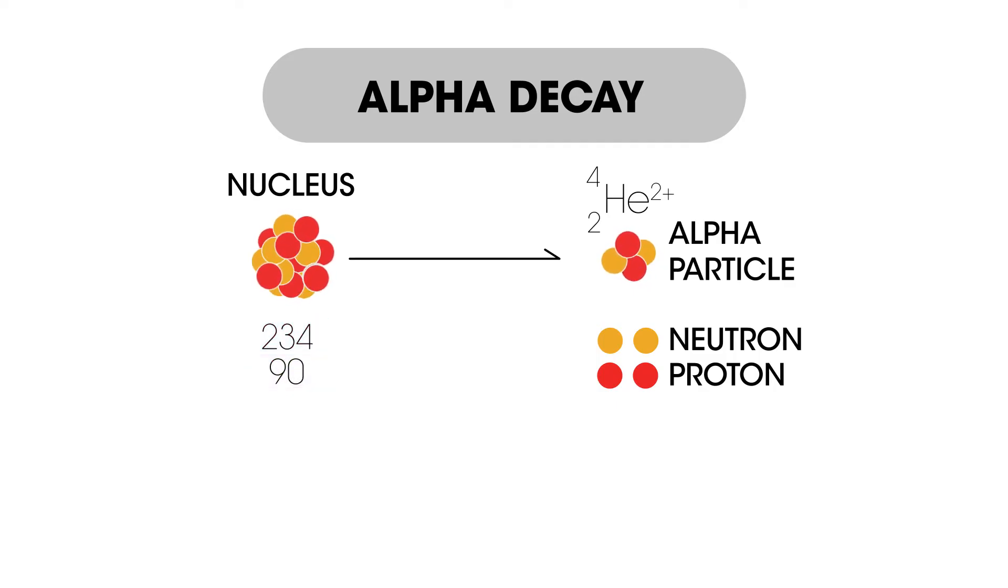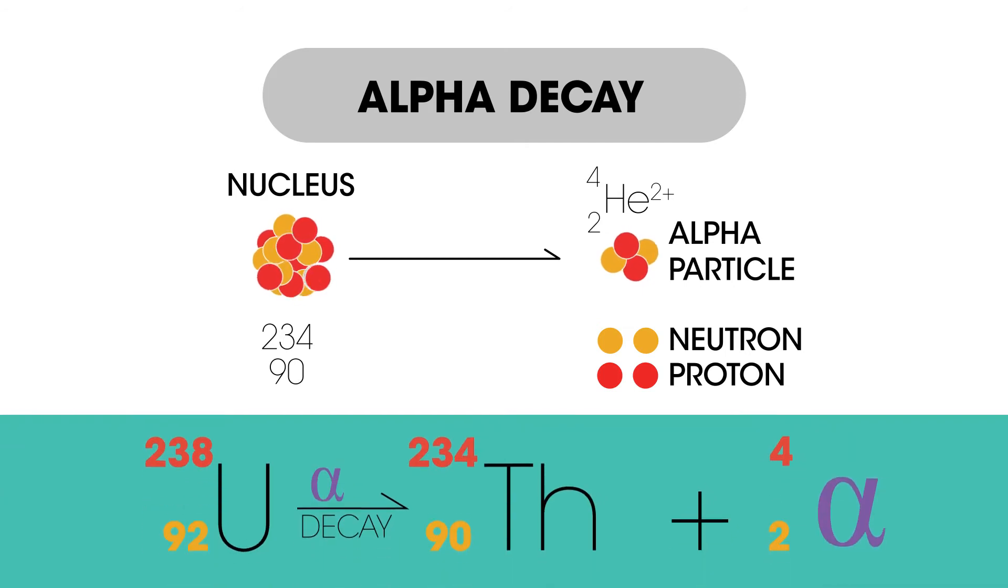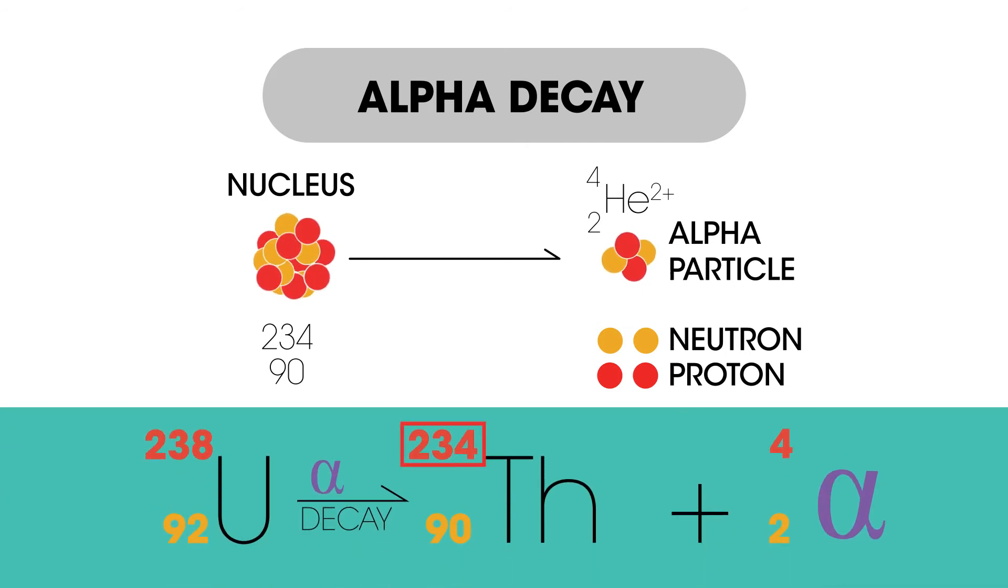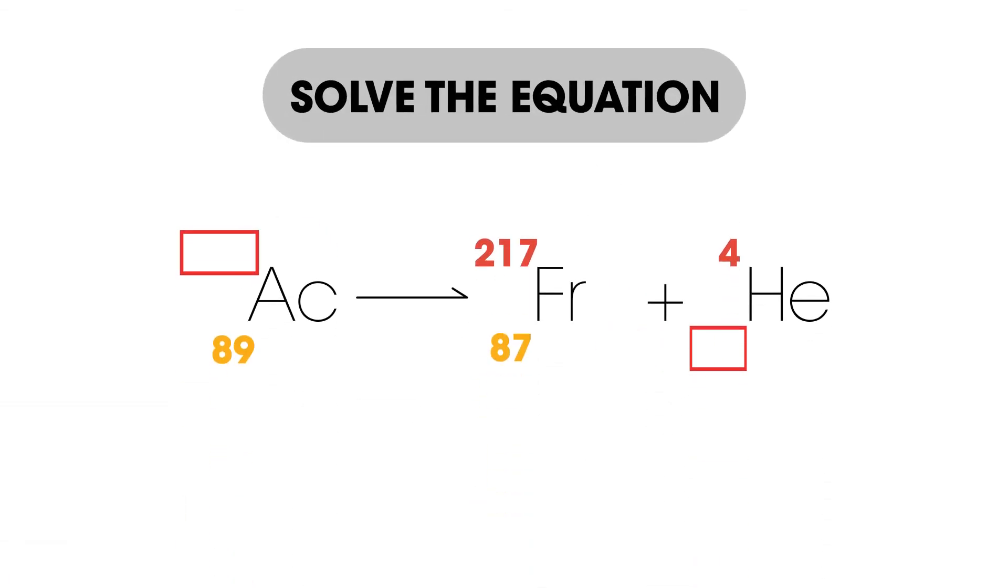So how does that look when we write it in the form of a symbol equation? We can see the mass number decreases by four while the atomic number decreases by two. We can see the mass number and atomic numbers are balanced on both sides of the equations. The mass number on both sides adds up to 238 while the atomic numbers on both sides add up to 92. Have a go at balancing the following equation by finding the missing numbers. How did you do?